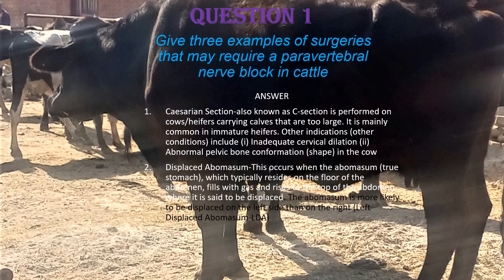The second surgery is displaced abomasum. This occurs when the abomasum, which is the true stomach typically residing on the floor of the abdomen, fills with gas and rises to the top of the abdomen where it is said to be displaced. The abomasum is more likely to be displaced on the left side, known as left displaced abomasum.